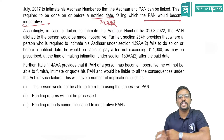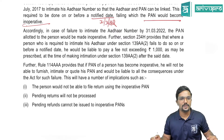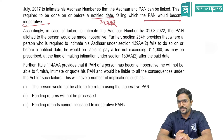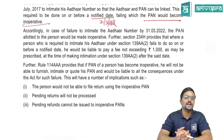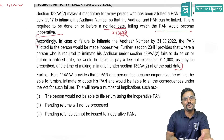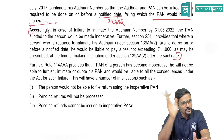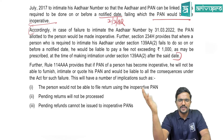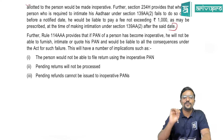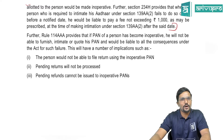In case of failure to intimate Aadhaar number by 31st March 2022, the PAN allotted to a person would be made inoperative. Section 234H provides that where a person fails to intimate Aadhaar by 31st March 2022, they would be liable to pay a fee not exceeding 1,000 rupees at the time of making subsequent intimation under Section 139AA. They are giving the option: you were supposed to do it before 31st March; if you didn't, you can still do it but with the late fee as per Section 234H.